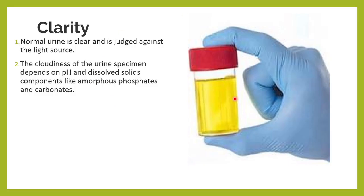So what do you mean by urine clarity? Agar aap ek normal urine ko dekhoge, so it is clear. Hum ek light source ke against us ko dekhenge to we can see the things behind it. The cloudiness of the urine, jabhi bhi urine cloudy hota hai, that could be because of various factors. But also remember that the cloudiness of the urine specimen depends upon the pH of this urine as well as the amount of dissolved solids and components like amorphous phosphates, carbonates, urates.